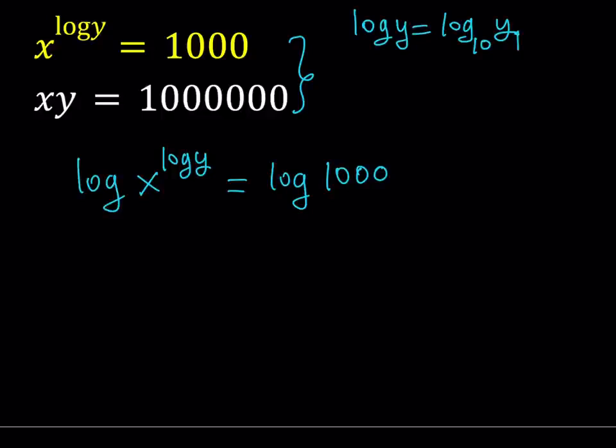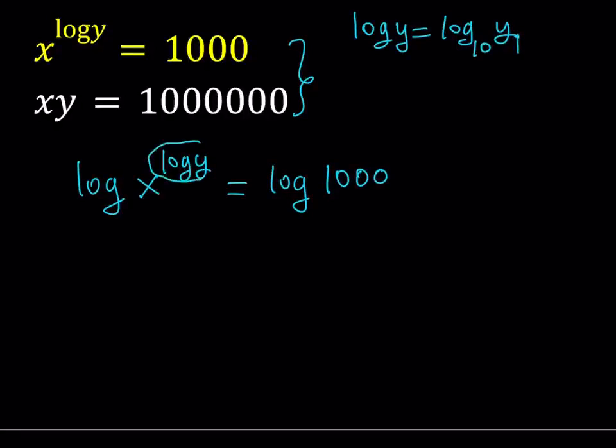But this operation basically brings the power down. So I can just move this guy over here to the front, using properties of logs. That gives us log y times log x equals log 1,000. Log 1,000 is, because 1,000 is 10 to the third power, it's just equal to 3.